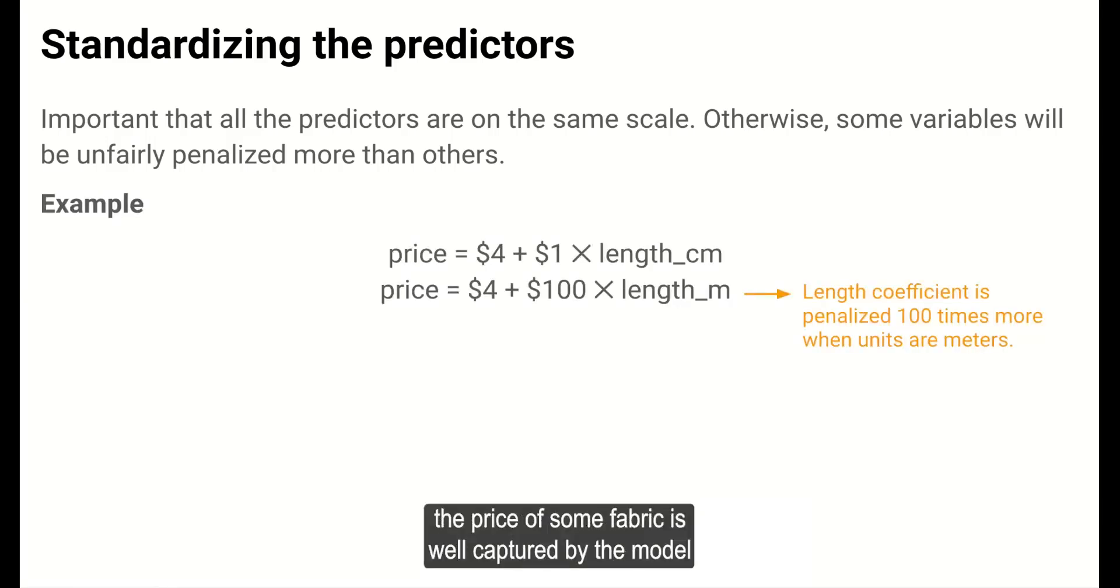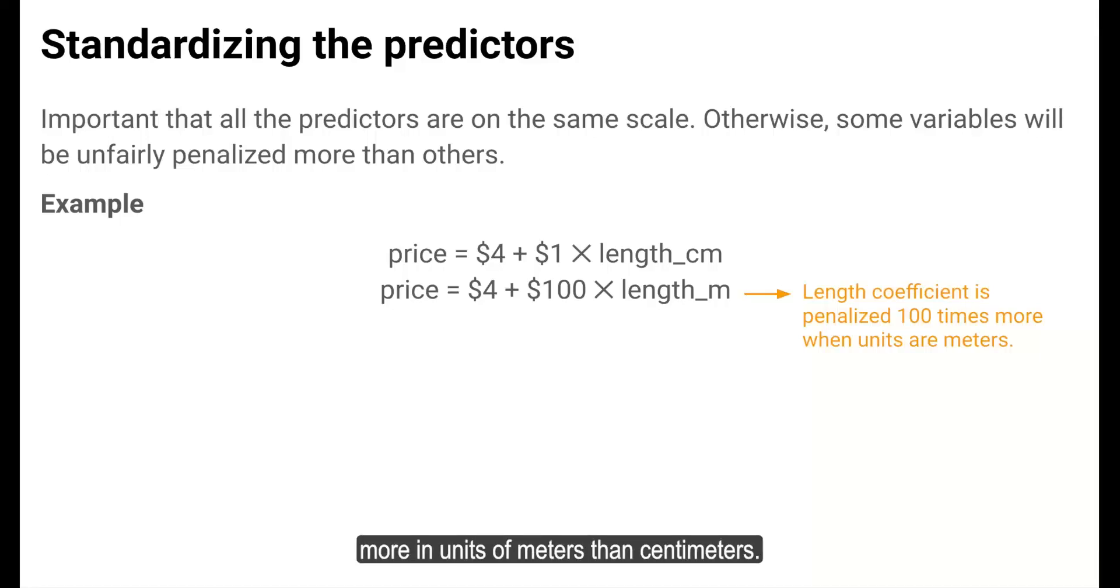For example, let's say that the price of some fabric is well captured by the model: $4 plus $1 per centimeter. If we convert centimeters to meters, we have exactly the same information, but the coefficient for the length variable is multiplied by 100. In LASSO, the length variable will be penalized 100 times more in units of meters than centimeters. This isn't fair to the length variable.